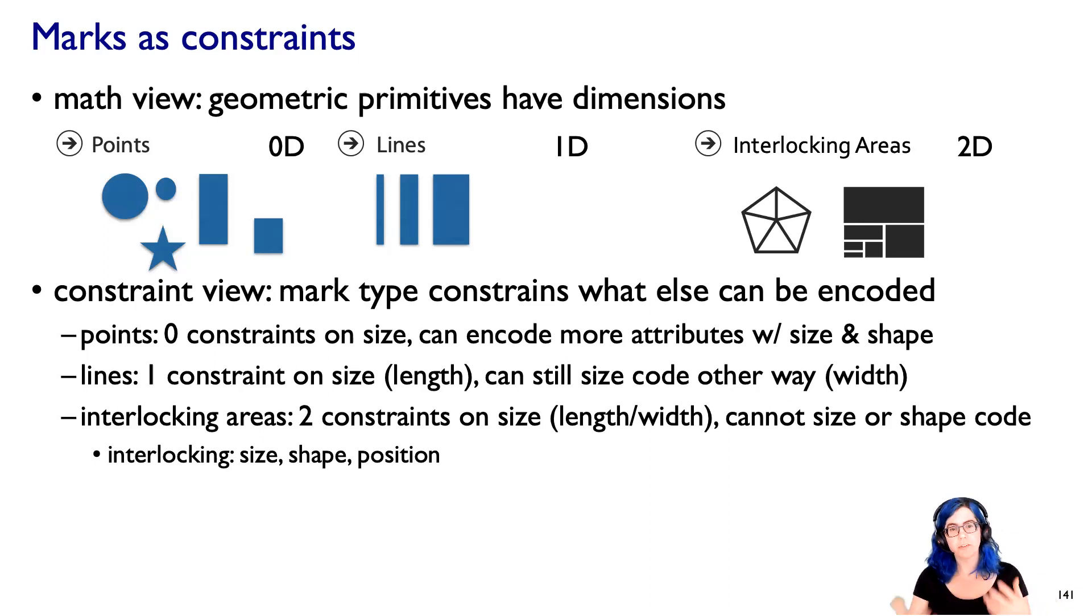With lines, you are partially constrained. Typically if you're using a line where you're actually length coding, then you're using one attribute for length, but the width of the line is actually unconstrained and you could size code some second attribute. You're partially constrained. And with these area marks - I'm going to emphasize that they're interlocking area marks - you've got constraints. You've got constraints on size. Both length and width are constrained. You can't size code them. You can't shape code them.